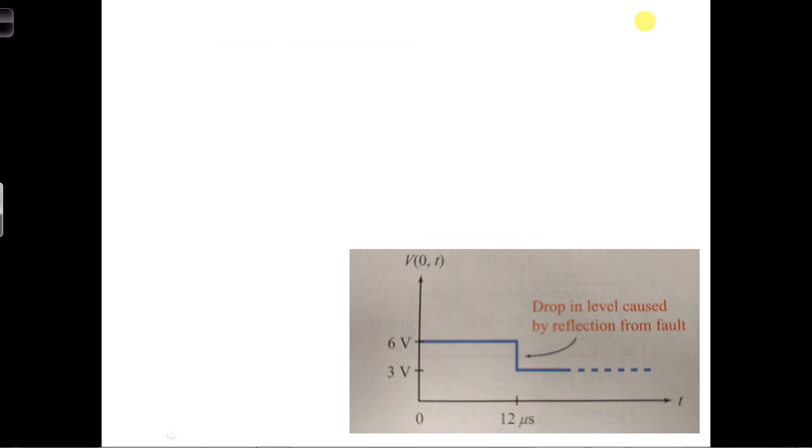The propagation speed of the waves on the transmission line is up, which is 1 over square root of mu epsilon.